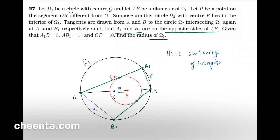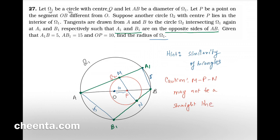For the construction, call the tangency point from A as M and from B as N, then join PM and PN. One caution: M, P, N may not be the same straight line, even though it looks like it in the picture. Try this for a bit and then come back.